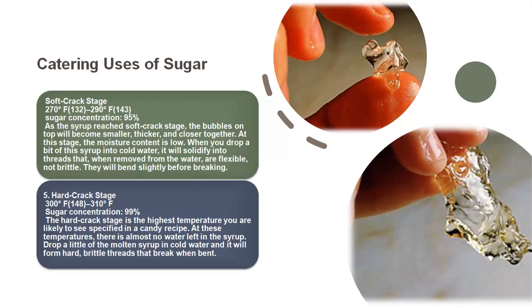The next stage is hard crack stage, obtained at 148 degrees centigrade. Sugar concentration is very high at 99%. The hard crack stage is the highest temperature you are likely to see specified in a candy recipe. At these temperatures there is almost no water left in the syrup. When you drop a little bit of syrup in cold water it will form hard brittle threads that break when bent. Caramel is also obtained at 160 degrees centigrade, which acts as a coloring agent. After that there is black jack, which is another coloring agent obtained at 170 degrees centigrade and above.